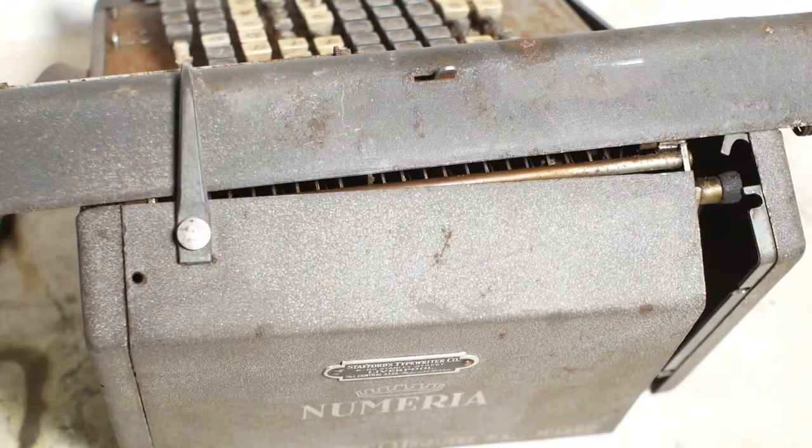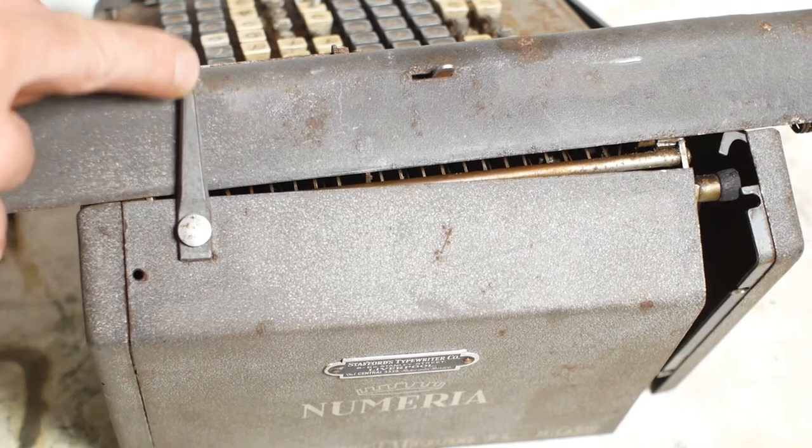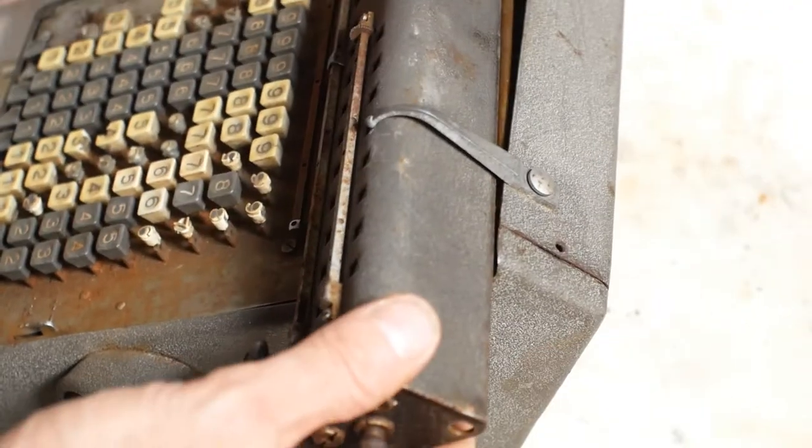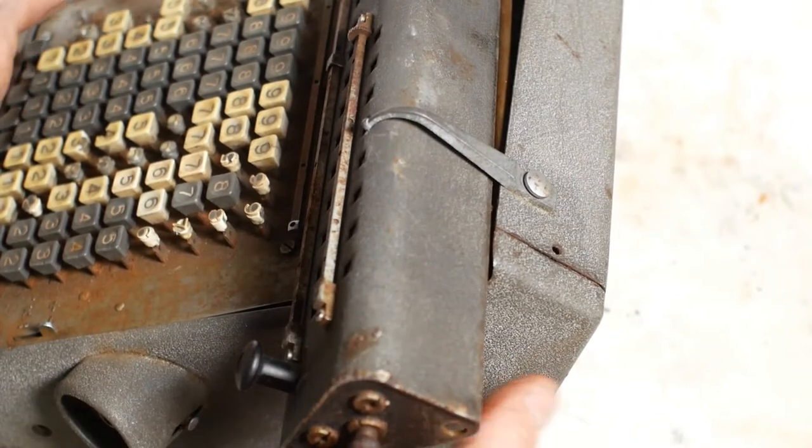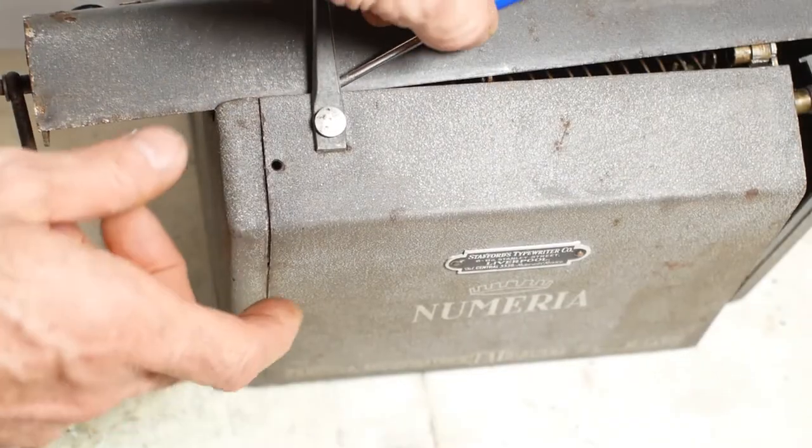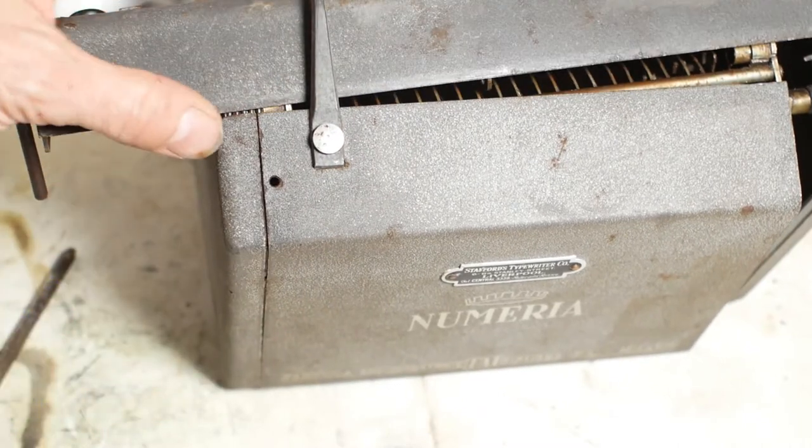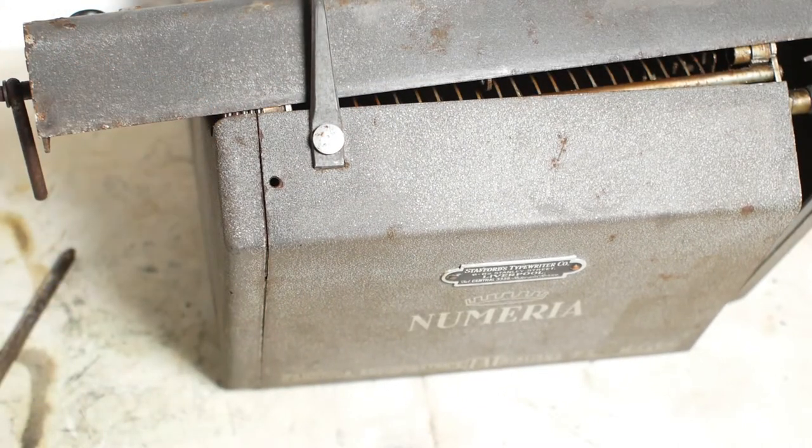But I still couldn't get the carriage off because this indicator arm that reaches over the top was preventing me from lifting the carriage off in the normal manner. So I had to find the second case catch, release that and then finally I managed to remove the carriage and also the rest of the case.